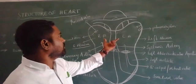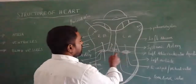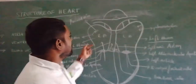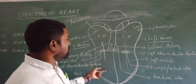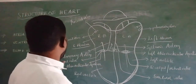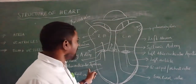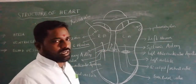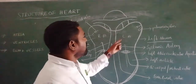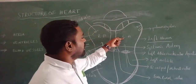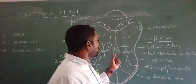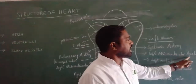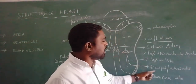The atria and ventricles are separated by a transverse septum called the atrioventricular septum. The right atrium opens into the right ventricle through an aperture called the right atrioventricular aperture, which is guarded by the tricuspid valve. The left atrium opens into the left ventricle through the left atrioventricular aperture, which is guarded by the bicuspid or mitral valve.